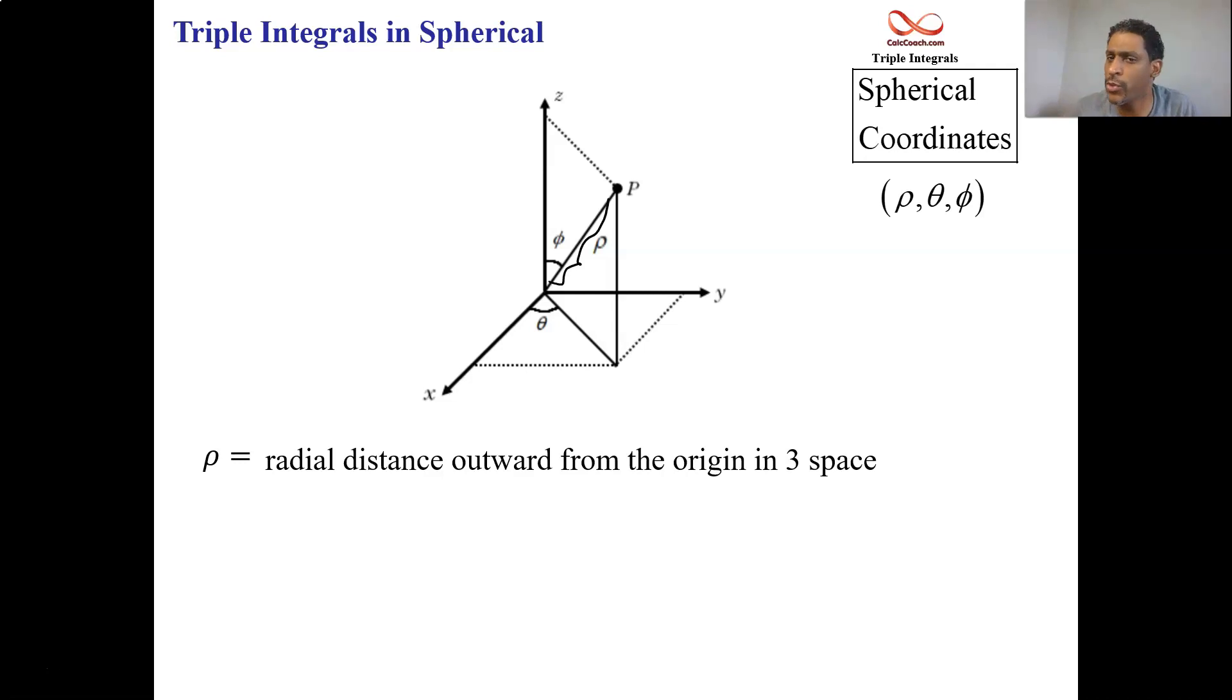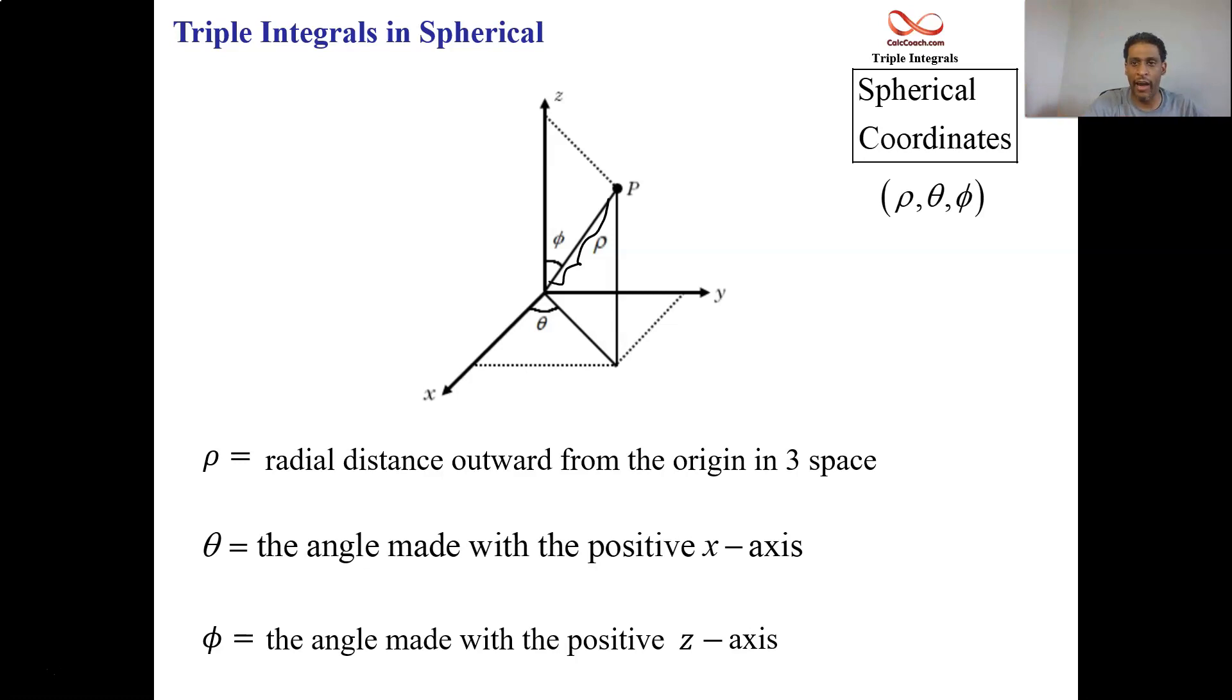It's kind of reminiscent to R, which was the radial distance outward in the XY plane. And so then θ is what you know it to be. It is the angle that you make with the positive x-axis. Positive angle is going counterclockwise. But there's a new angle. And that angle is reminiscent to the θ. If θ is the angle that you make with the positive x-axis, this new angle is called phi, P-H-I. It is the angle that you make with the positive z-axis. I like to call it the hammer-down or chop or tomahawk. It's the angle that you come down from the positive z-axis.